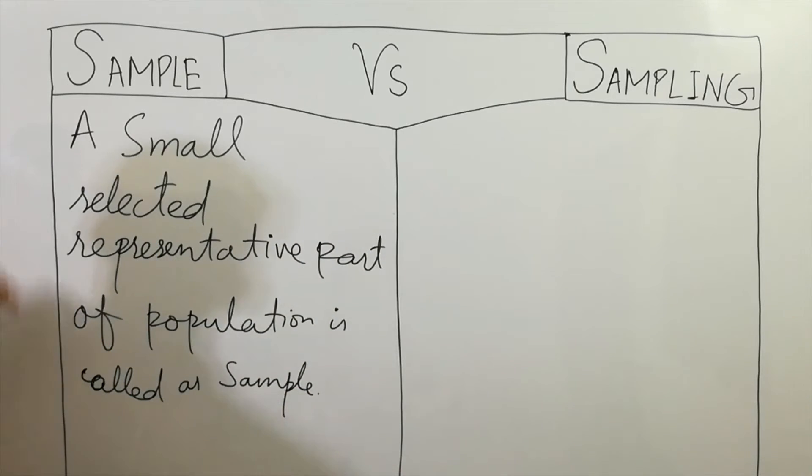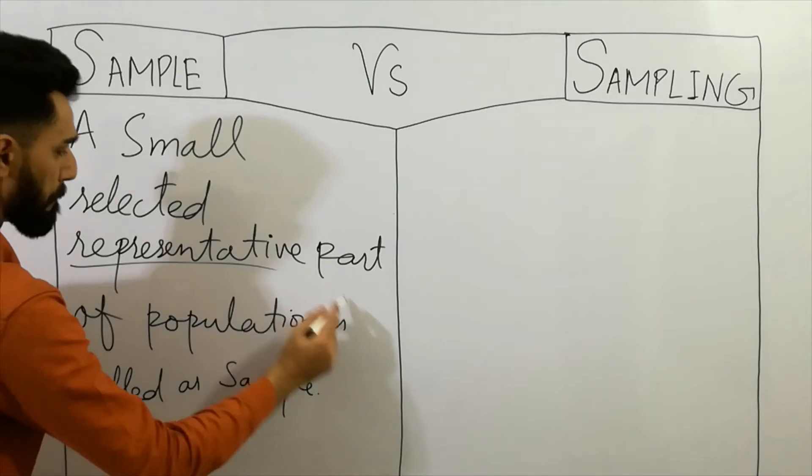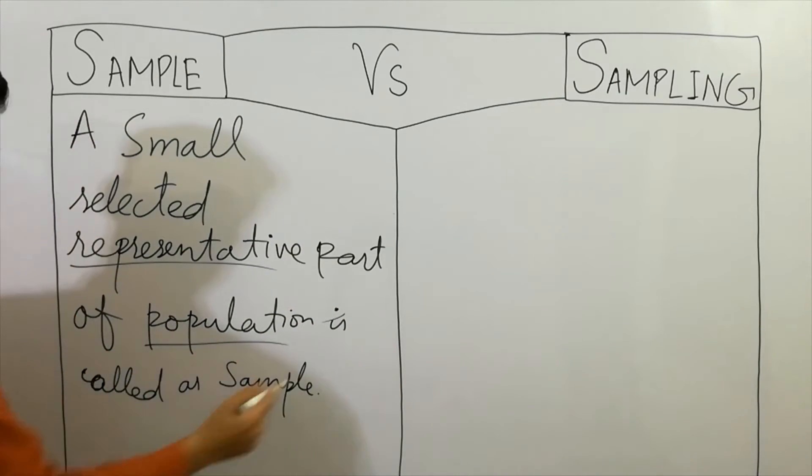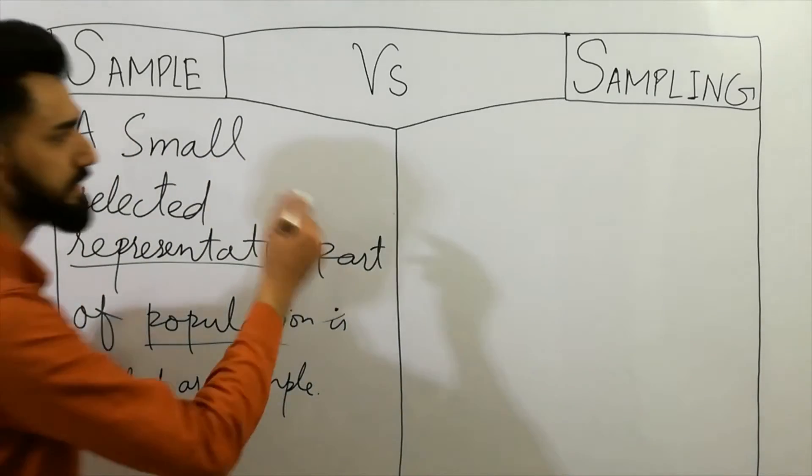Very easiest: A small selected representative part of population is called as sample. So let's discuss the sampling. What is sampling?